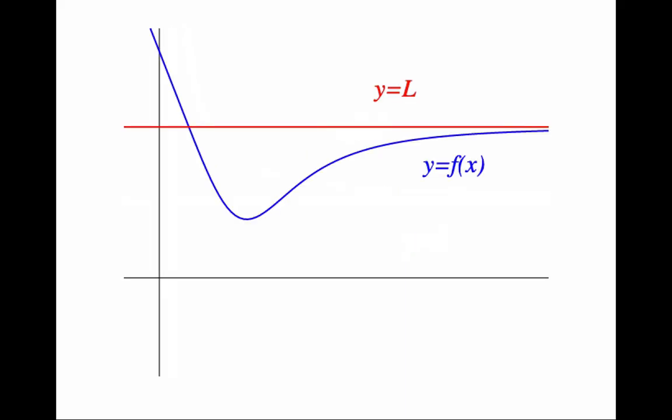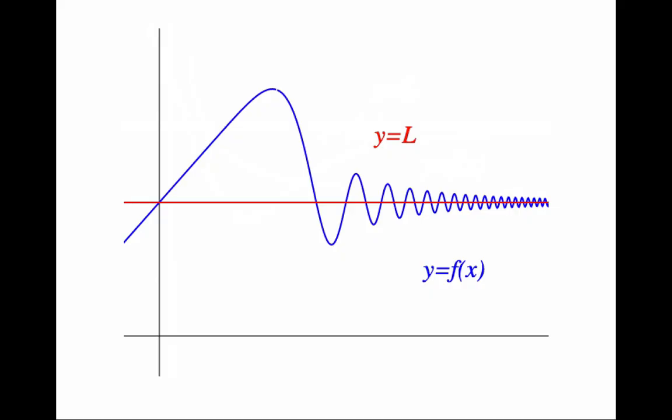For example, here is another function whose graph does have an asymptote. The limit as x goes to infinity of f, in this case, is L. And yet, the two graphs do intersect, they touch. And here is another example where the two not only touch, but they get intimate. They intersect many times. But it is still a horizontal asymptote.